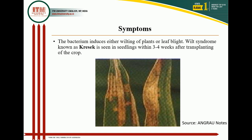In grown-up plants, water-soaked translucent lesions appear usually near the leaf margin. The lesions enlarge in both length and width with a wavy margin and turn straw yellow within a few days, covering the entire leaf. The lesion may cover the entire leaf blade which may turn white or straw-colored. In susceptible varieties, milky or opaque dew drops containing bacteria ooze out on guttation in the early morning and dry up on the surface leaving a white incrustation.